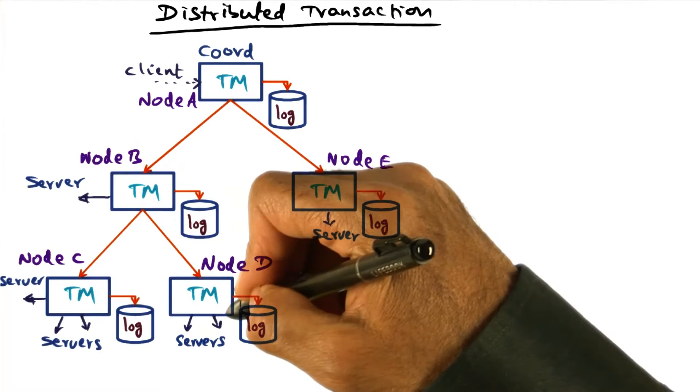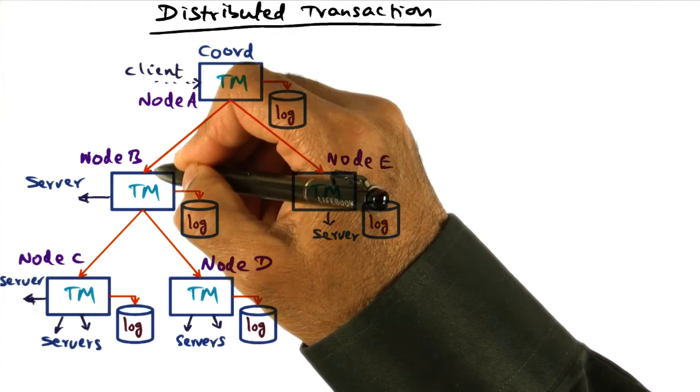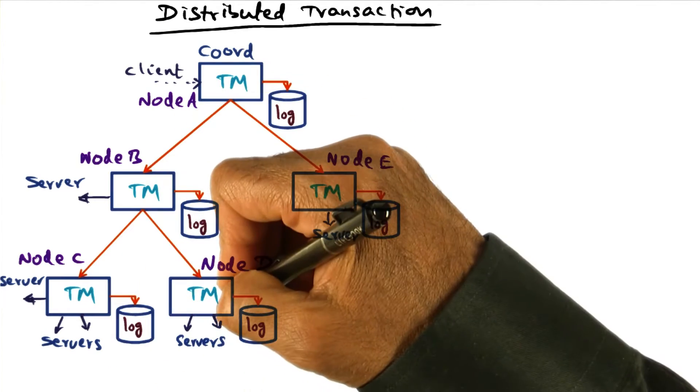For instance, the transaction managers at node C and D have been contacted because of IPC that originated at node B to node C and D respectively.